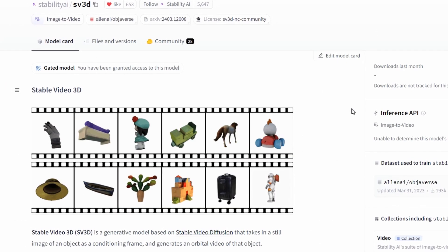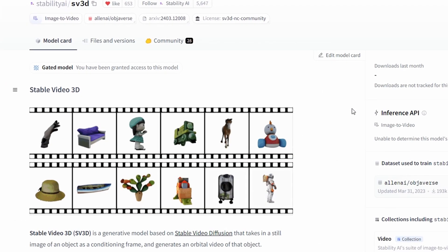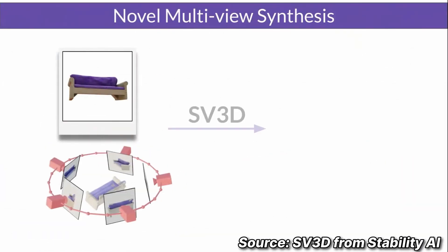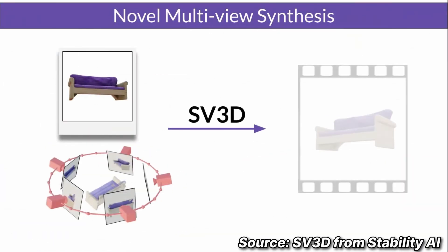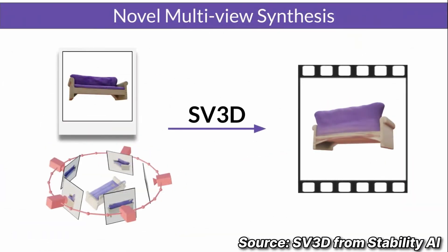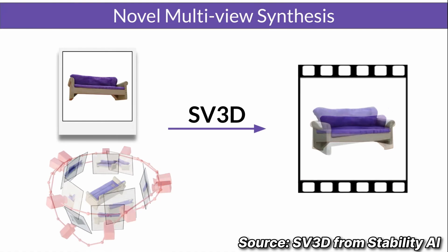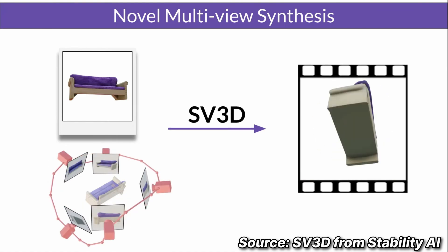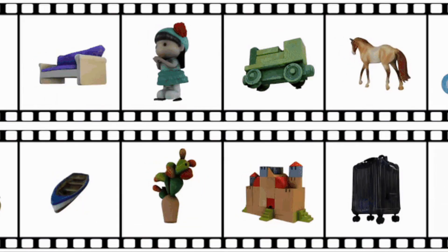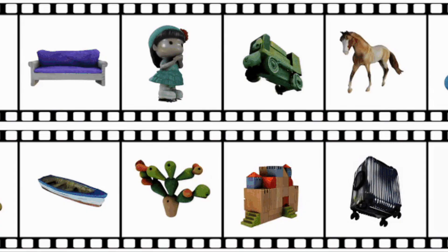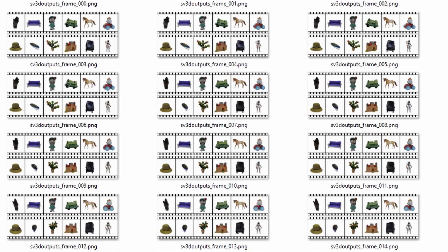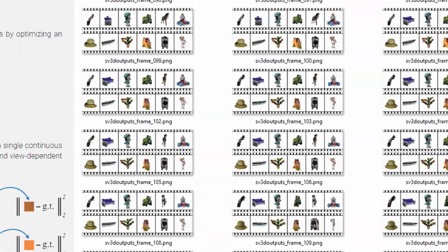The same concept has been applied to video diffusion models as well, leveraging the inherent temporal and spatial capabilities of video diffusion models to create even more robust 3D novel multi-views. But this isn't really a 3D representation — it's more of a series of 2D representations or photos.